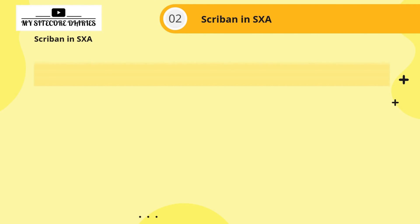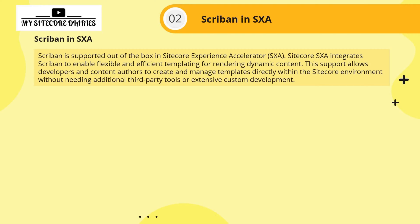How is Scriban used in SXA? Scriban is supported out of the box in SiteCore Experience Accelerator. SiteCore SXA integrates Scriban to enable flexible and efficient templating for rendering dynamic content. This allows developers and content authors to create and manage templates directly within the SiteCore environment, without needing additional third-party tools or extensive custom development.